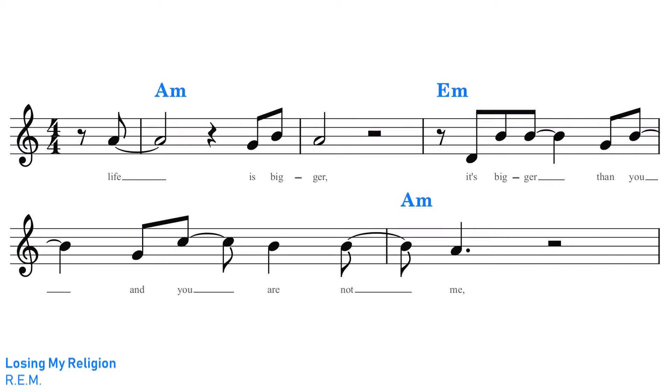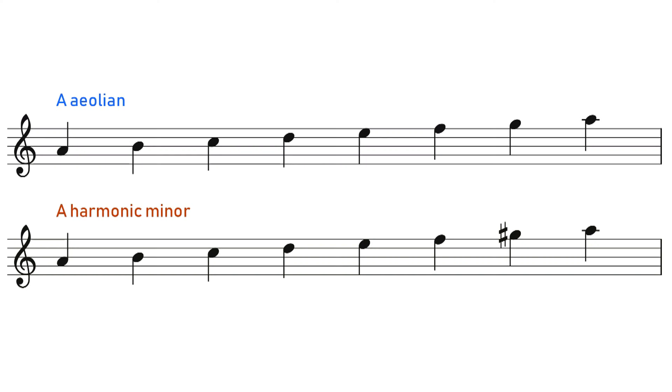The Aeolian scale, the natural minor, has a mournful, solemn sound. It almost has a sense of weight and seriousness. A good way to think about the sound of Aeolian, of the natural minor, is to compare it to our other common minor scale, the harmonic minor.